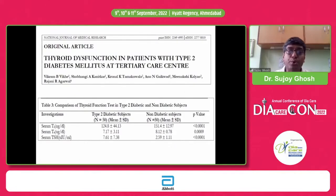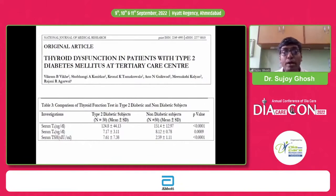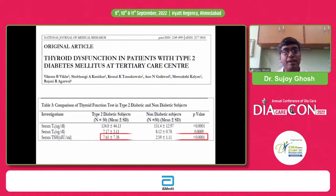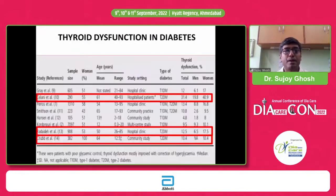Studies show that if you compare thyroid function tests in a diabetic individual with a non-diabetic individual, you will have lower T3, lower T4, with possibly slightly higher TSH values. These might be normal physiological alterations because of diabetes per se. Therefore, don't jump in and treat subclinical hypothyroidism, and do not jump in and treat hyperthyroidism — assess the thyroid function test values very carefully.